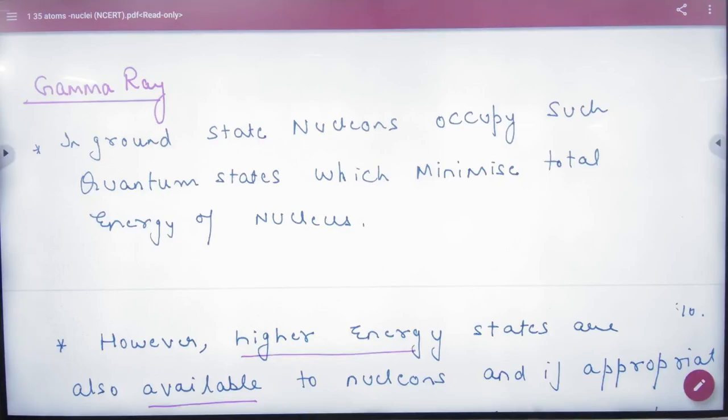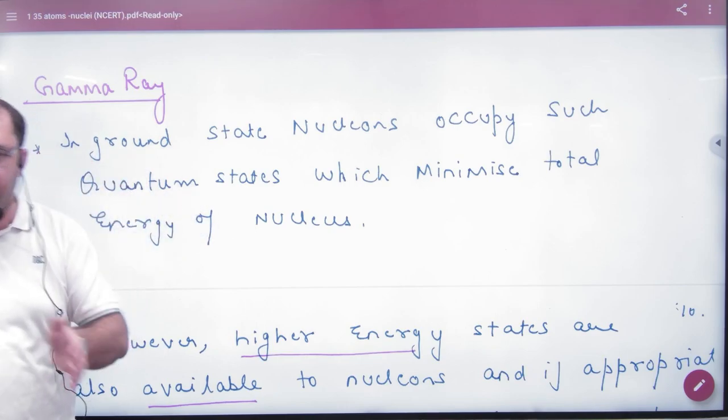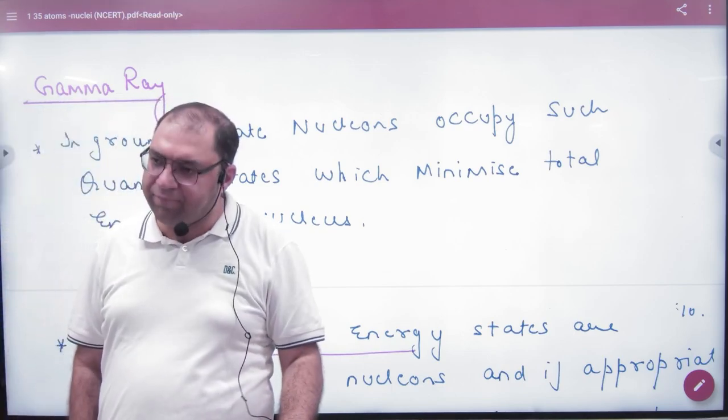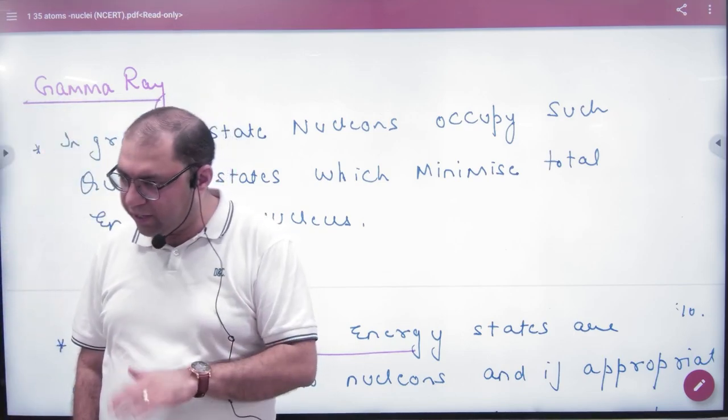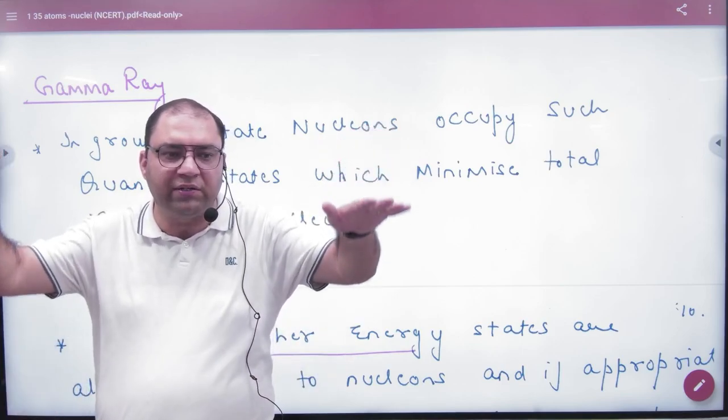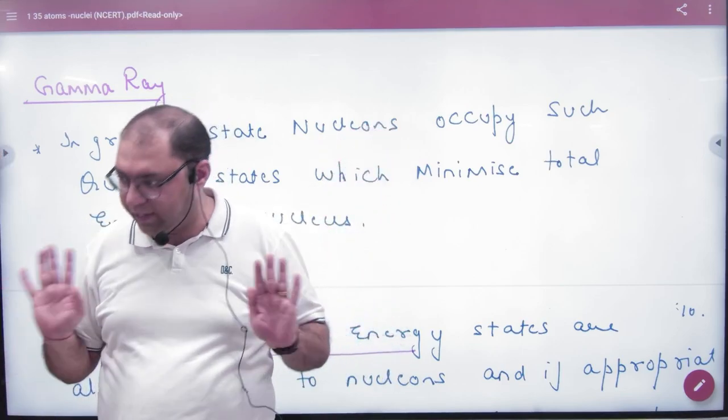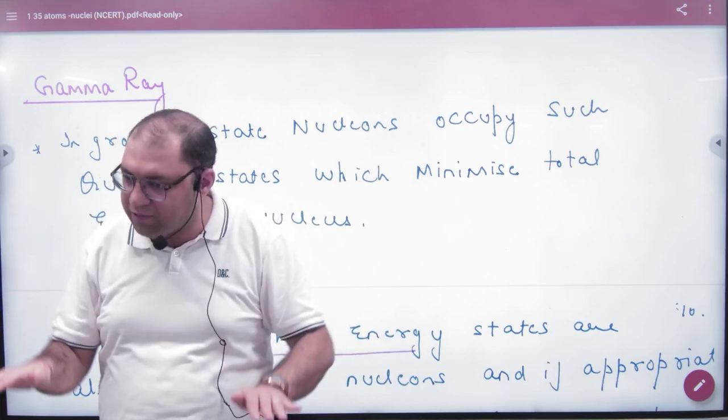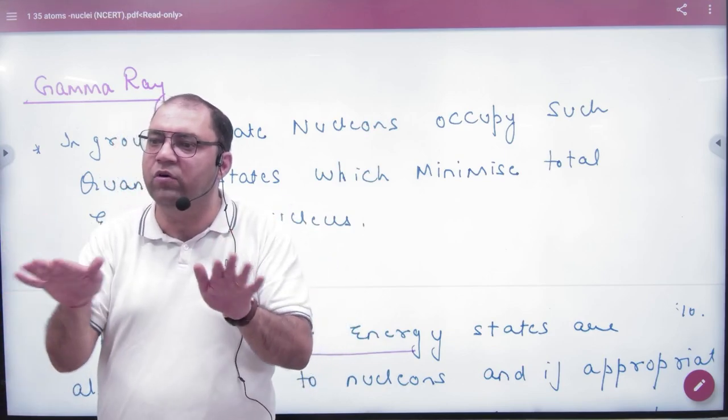What is in the gamma rays? Ground state nucleons occupy quantum states which minimize total energy of the nucleus. Nucleons in the nucleus, like electrons in atoms, want to stay in lower energy states so that they stay stable.